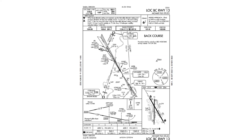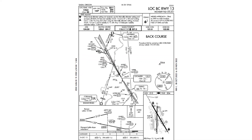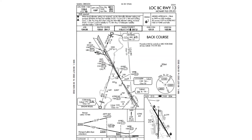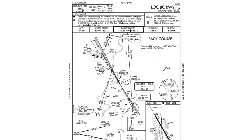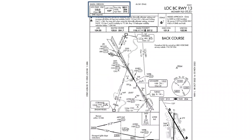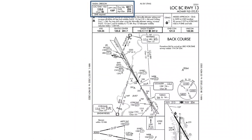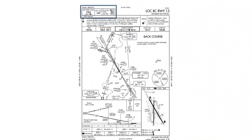This is the localizer back course approach to runway 13 at McNary Field in Salem, Oregon. The localizer frequency, approach course, runway length, and touchdown zone elevation are displayed in the top left of the chart.